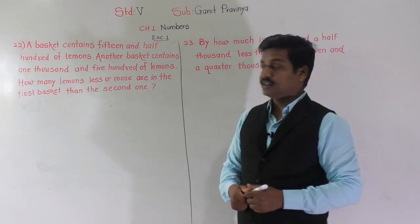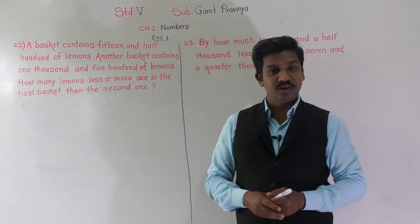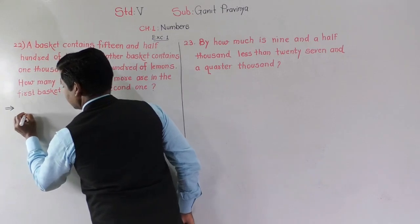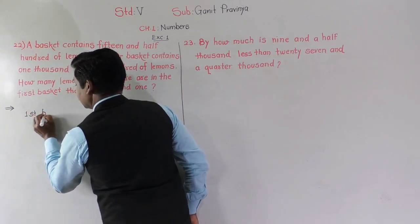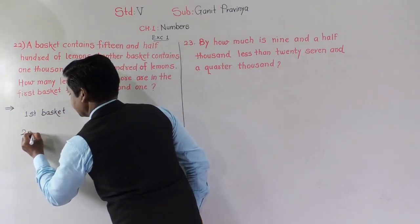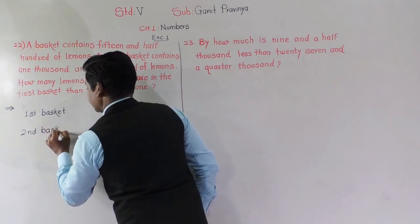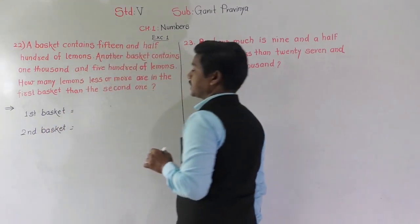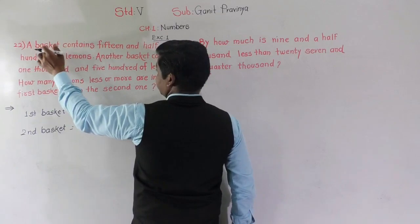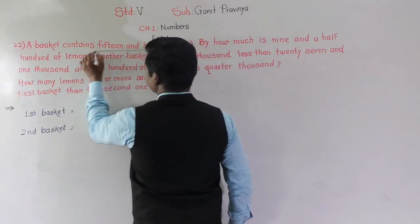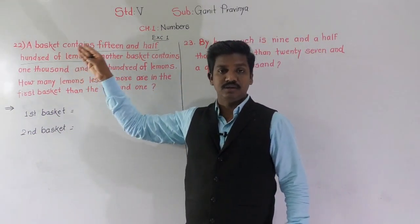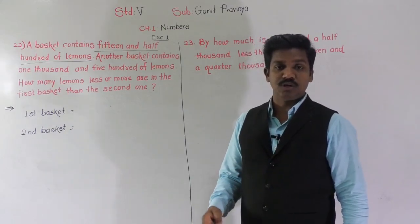In this problem there are two baskets of lemon — first basket and second basket. In the first basket, a basket contains 15 and a half hundred of lemons. So 15 and a half hundred of lemons — how many lemons is that?